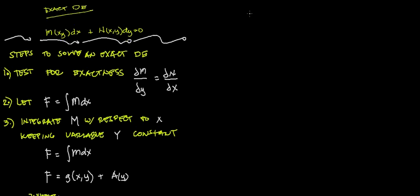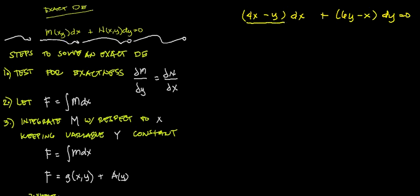So say we have an equation in this form: (4x - y)dx + (6y - x)dy = 0. As you can see, we are already in this standard form. We have M as a function of x and y — this is our M — multiplied by dx. And we have N as a function of x and y, multiplied by dy, equal to 0.